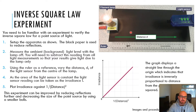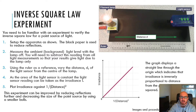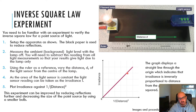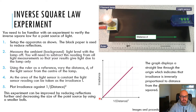First, set up the apparatus and measure the ambient or background light level with the lamp off — this records the light level in the room. You need to subtract that from any results you get, because the light sensor picks up both background light and light from the filament lamp. Then use the ruler to move the light sensor at different distances from the filament lamp and record the data. Since the area of the light sensor is constant, the light sensor reading can be taken as the irradiance. You plot irradiance against 1/d² and get a straight line through the origin, which shows that irradiance is inversely proportional to distance squared.